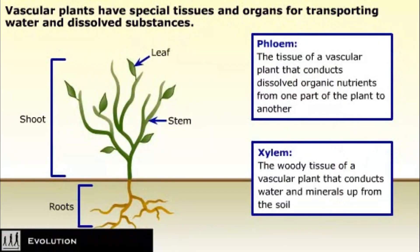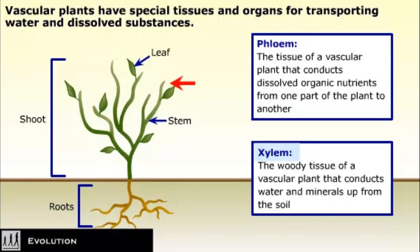Evolution of an efficient vascular system allowed vascular plants to grow larger than their ancestors. There are two types of vascular tissue in vascular plants: xylem and phloem. Xylem is a woody tissue that conducts water and minerals from the soil up through the roots to the shoot of the plant — the part above ground. Xylem also makes the plant more rigid and helps support it against the force of gravity. Phloem conducts dissolved organic nutrients from one part of the plant to another.